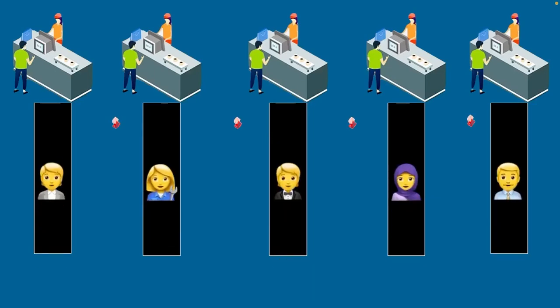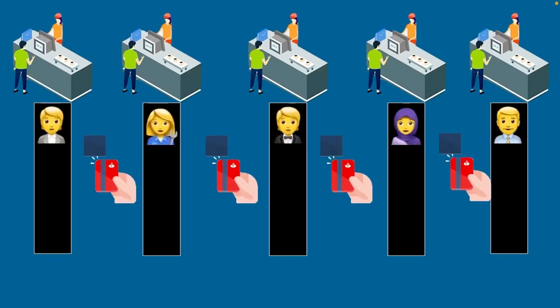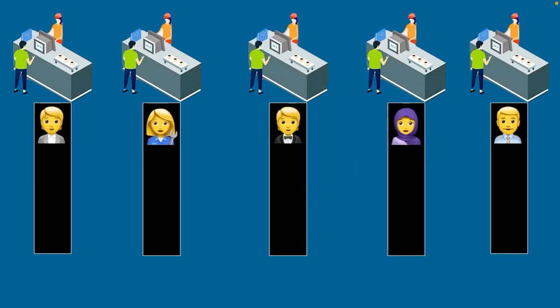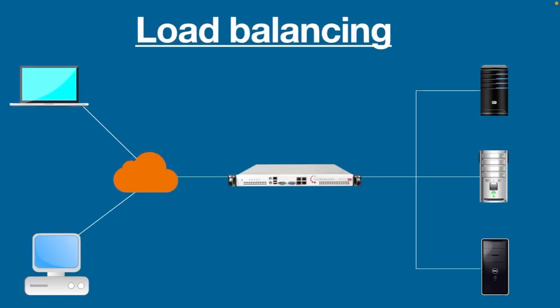So everyone quickly pays for their grocery bills depending on their shopping items. Load balancing works in the same way — by dividing user requests among multiple servers, users' wait time is vastly cut down, which results in a better user experience.